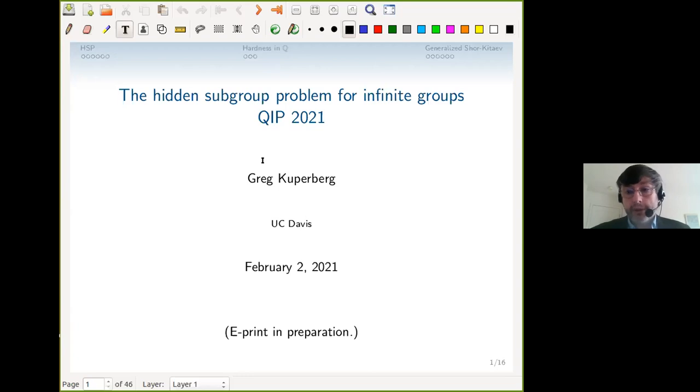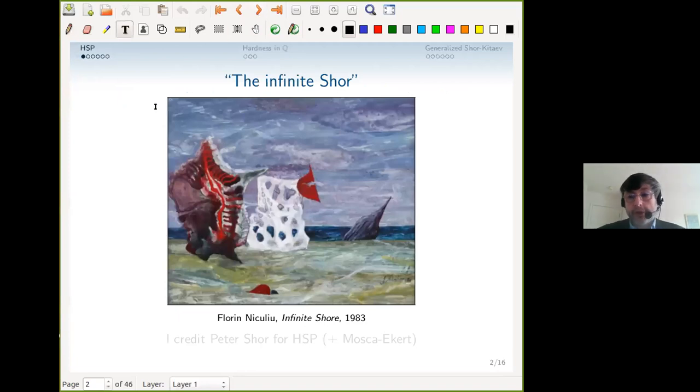I was going to call it 'The Infinite Shore,' though that turned out to be too cryptic. But in honor of Peter Shor, here's a painting I found online. Peter Shor is one of the people responsible for the hidden subgroup problem, although it was introduced in a paper by Mosca and Ekert.